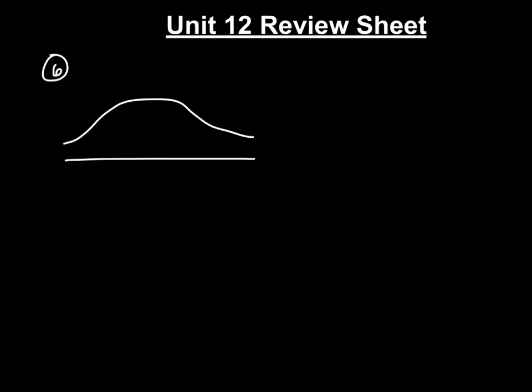We're going to have a normal distribution curve. The mean is 9.8, and the standard deviation is 0.6. Let's read further to figure out which way we have to go on this curve. It says: determine the number of boxes of animal crackers in a shipment of 5,000 boxes that are expected to weigh more than 11 ounces.